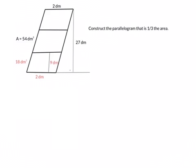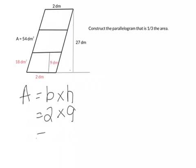To review: originally we had a parallelogram with an area of 54 decimetre squared. We found factors or multiplied one-third of 54 to find the new area of 18 decimetre squared. The new parallelogram is one-third of the area, so it's 18 decimetre squared. It has the same base of 2 decimetres and a height of 9 decimetres, which is one-third of the original height of 27. We can confirm this: area equals base times height, so 2 times 9 equals 18 decimetre squared, which is one-third of 54 decimetre squared.